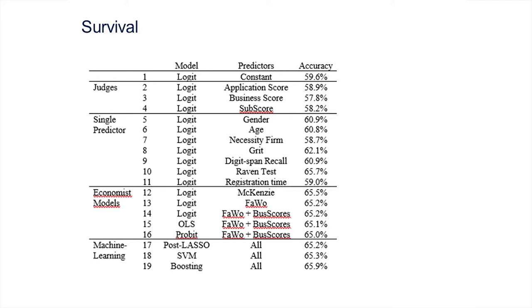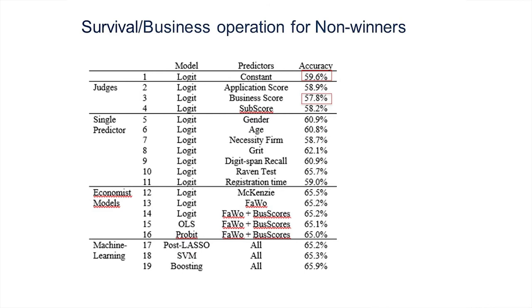How do the machines compare to humans? For predicting business survival, 59% of firms survive — just using that constant as a baseline. The judges' scores give less accuracy than the constant. The economist models and machine learning models give a slight improvement, but machine learning does no better than the human economists. Even just using the Raven test score alone performs as well as any of these complicated models.